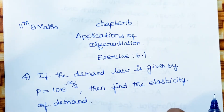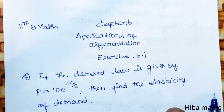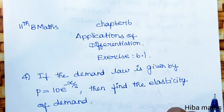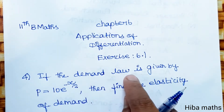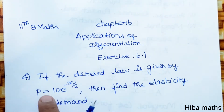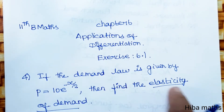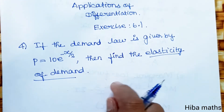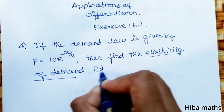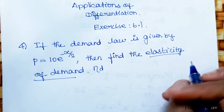Hello students, welcome to Heba Max 11th standard Business Maths, Chapter 6: Applications of Differentiation, Exercise 6.1, fourth question. If the demand law is given by p = 10·e^(−x/2), then find the elasticity of demand. The elasticity of demand is equal to η_d.